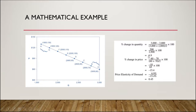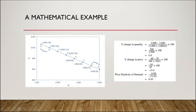Quantity increased 6.9 percent. We do something similar for the change in price. Price went from $70 to $60, so we take the new price 60 minus the old price 70, over the average of the two, times 100. We get a minus 15.4 percent change in price. So we take the positive percent change in quantity over the negative percent change in price — price fell, quantity demanded increased — and we get a price elasticity of 0.45.